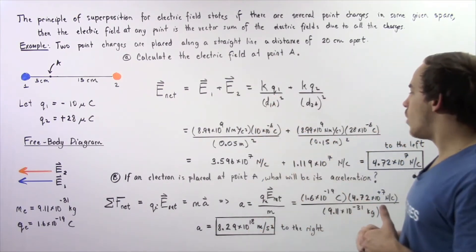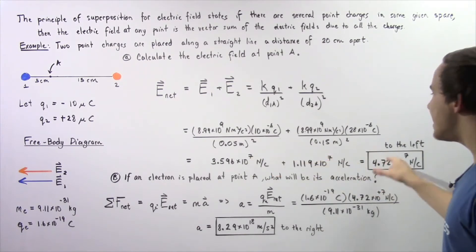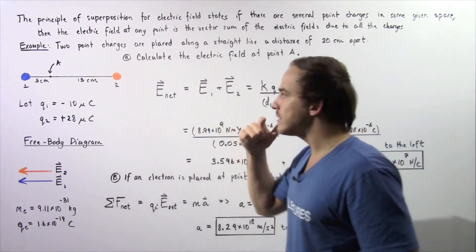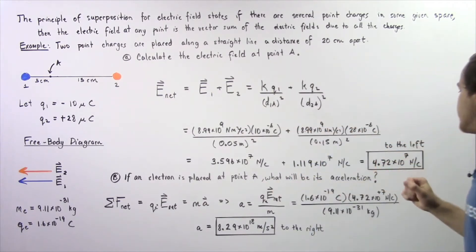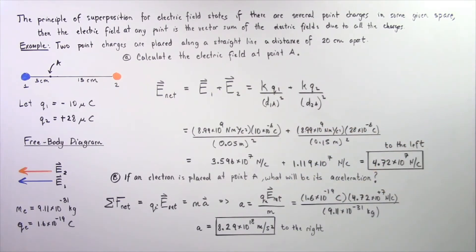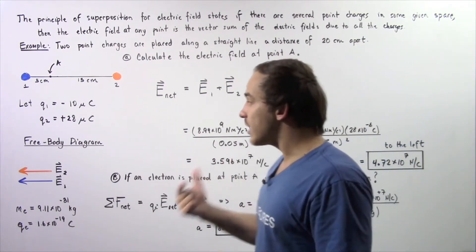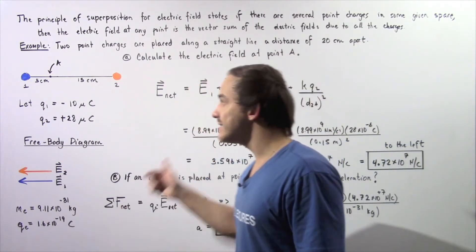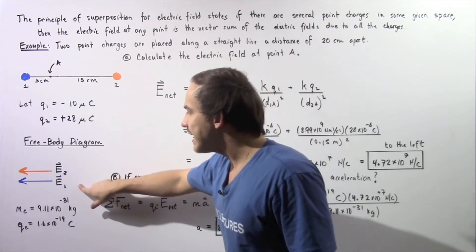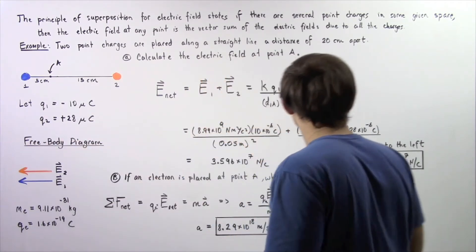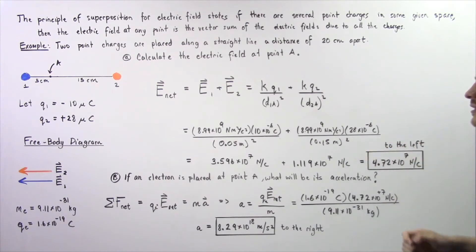Calculating these two quantities and adding them up, the magnitude of the electric field at point A is 4.72 times 10 to the 7 newtons per coulomb. The direction is to the left, because both electric field vectors point in the same exact direction.